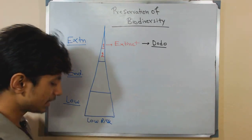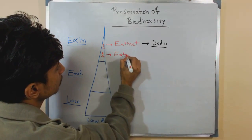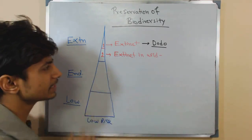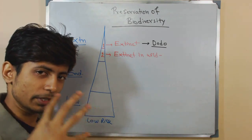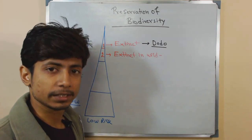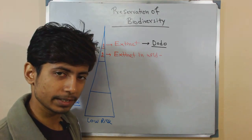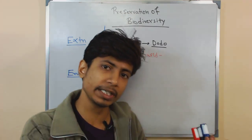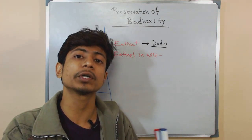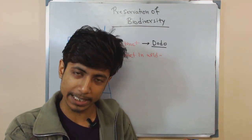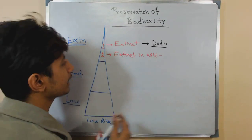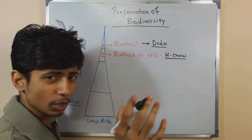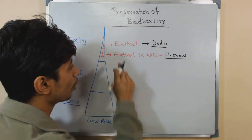The second category under extinction is called 'extinct in the wild.' Extinct in the wild means a particular species is not present in the wild — not a single individual has survived there — but we have some of them in captive situations where humans are monitoring their growth and reproduction to produce a better variety so they can be reintroduced into the wild. The example of extinct in the wild is the Hawaiian Crow.